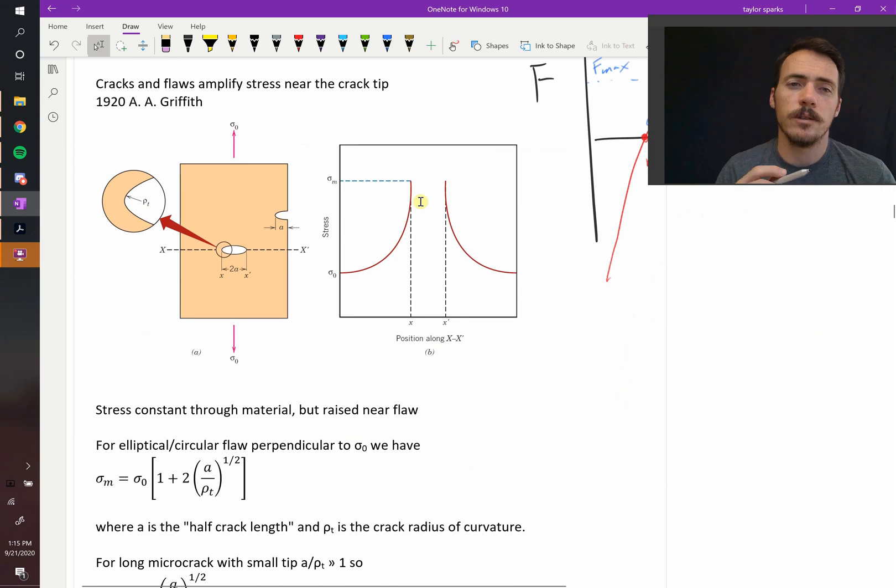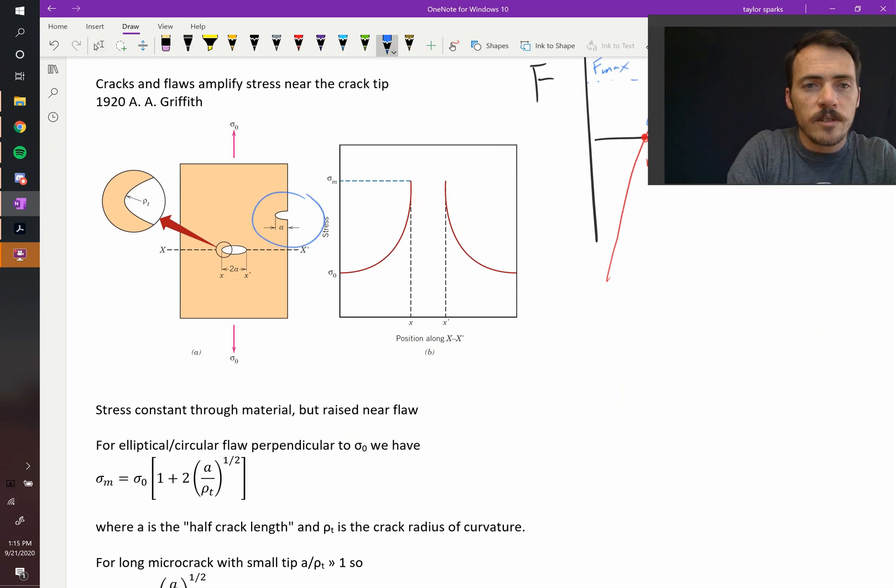They might be on the surface. This is an example of a surface flaw right there. It has some half crack length of A, or if it's in your material, then the total flaw is equal to two times the half crack length. Half on the surface, 2A if it's in the bulk.